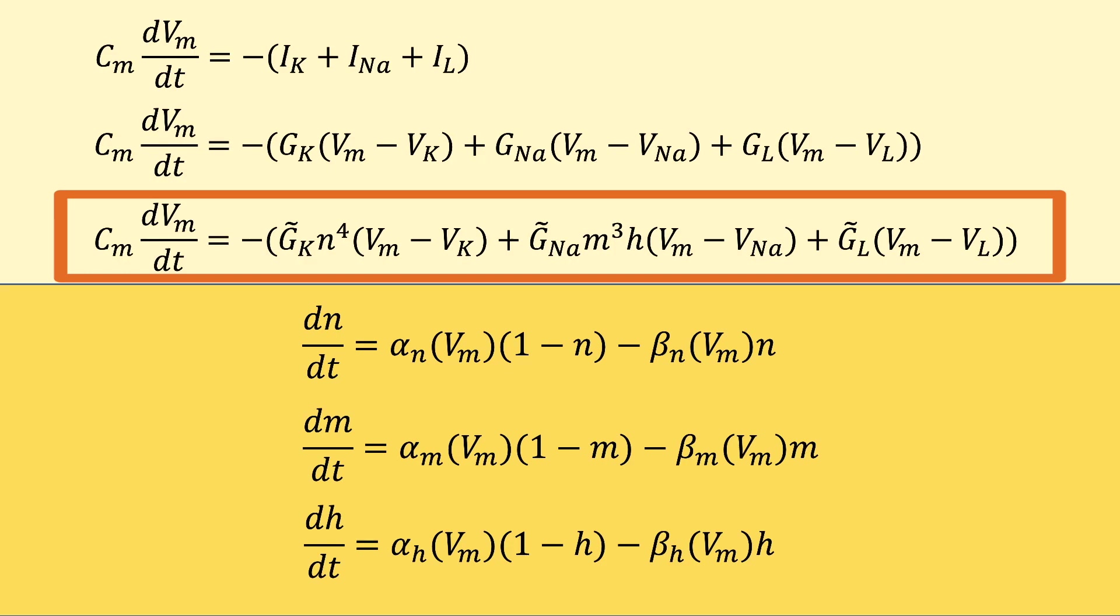However, we do not know what alpha and beta are, since we don't know the opening and closing rates of these channels. The solution here comes once again from experimental data, namely voltage clamp experiments. In these experiments, opening and closing rates were determined and are given as follows for each channel.